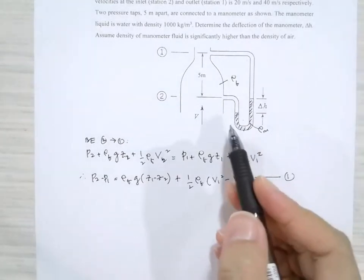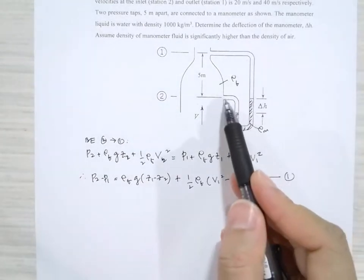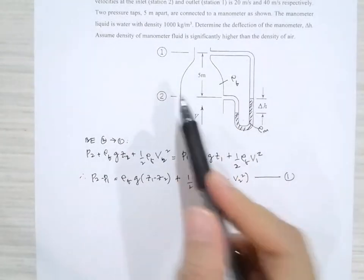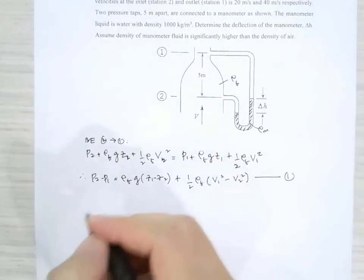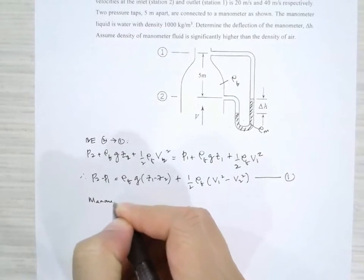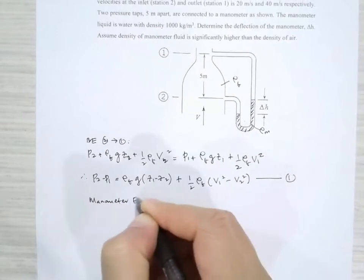We can also use manometer equations because this end of the manometer will sense P2, whereas this end will sense P1.